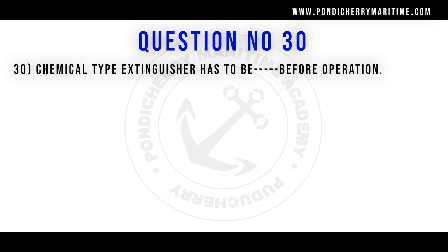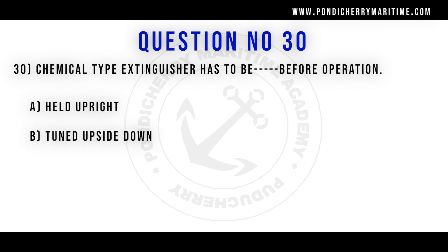Thirtieth question. A chemical type extinguisher has to be blank before operation. Option A. Held upright. Option B. Turned upside down. Option C. Kept original. Correct answer is option A: Held upright.